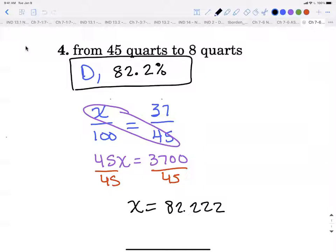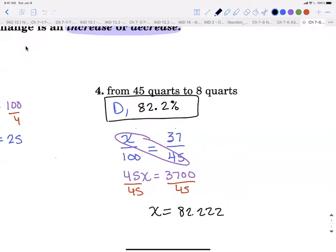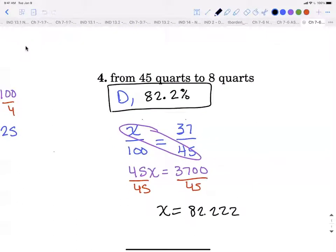So we had our equation set up. We do the butterfly. We get 45x equals 3,700. We divide off the 45 and we get 82.2222. But our answer, we need to round to the tenth. So what we put up in our actually answer that we circle next to the D is 82.2%. And that's the work you'll need to show for any of the percent of change ones.